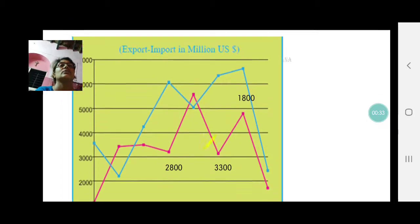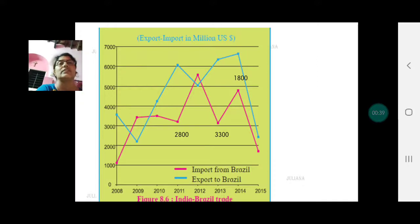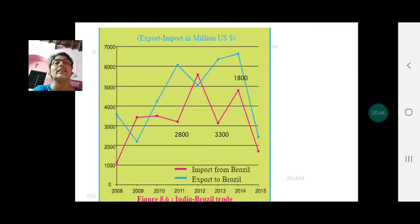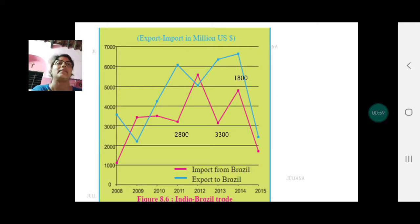The value is given on the y-axis in million US dollars for different years from 2008 onwards. The blue line represents exports to Brazil from India, and the pink line represents imports from Brazil to India. There are a few questions which we need to answer, which we will take one by one.